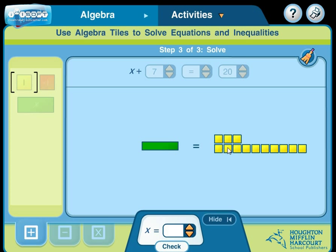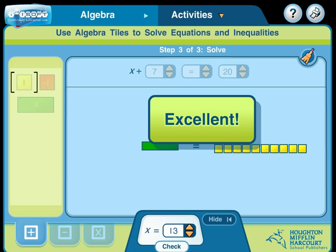So let's count how many we have. 1, 2, 3, 4, 5, 6, 7, 8, 9, 10, 11, 12, 13. So the answer here has got to be 13. And we are correct.